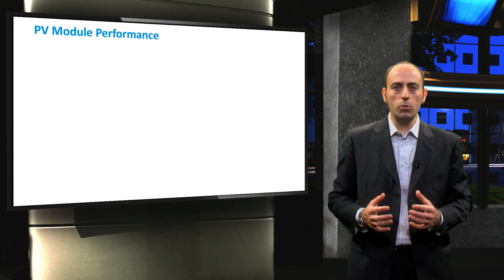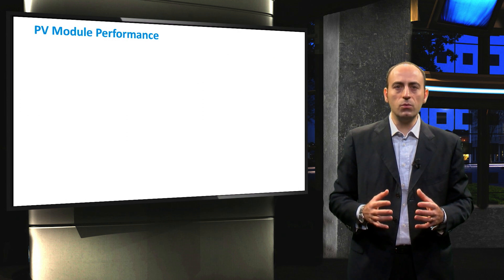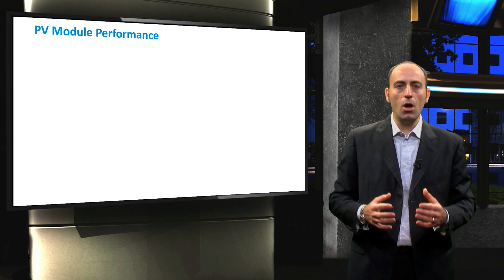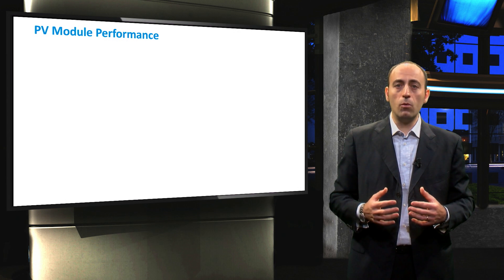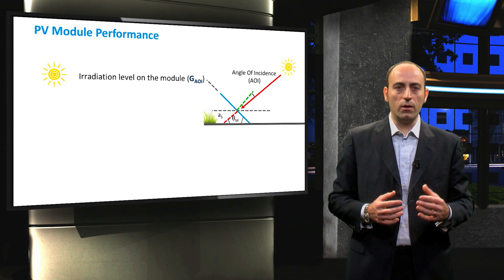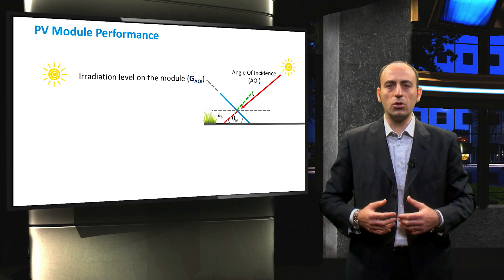In order to compute the module performance, it is fundamental to estimate the effect of the irradiance and the module temperature on the PV output. We already know how to compute the irradiance falling on a module with a tilt of theta m and as function of the angle of incidence.